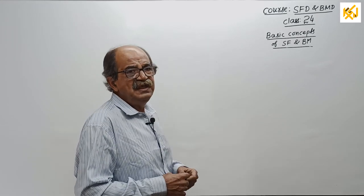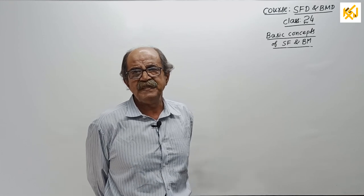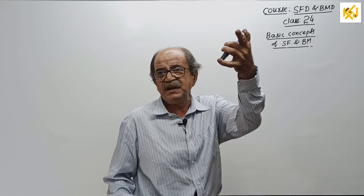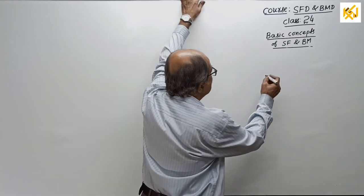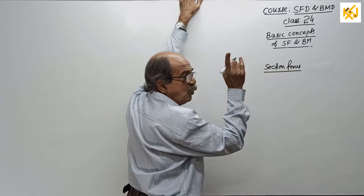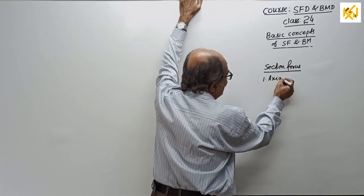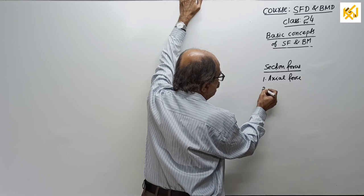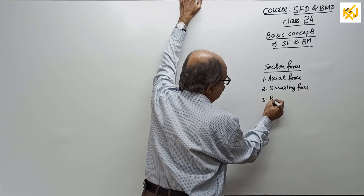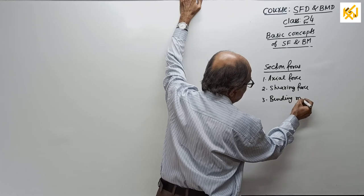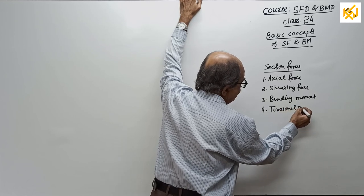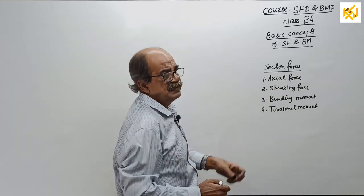Before you calculate SF, BM, axial force, or torsion — they are all called section forces. There are four section forces: one, axial force; two, shearing force; three, bending moment; and four, torsion moment. These are the four section forces, and our course will focus on shearing force and bending moment.